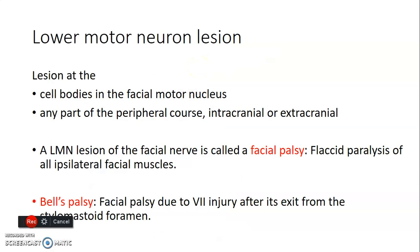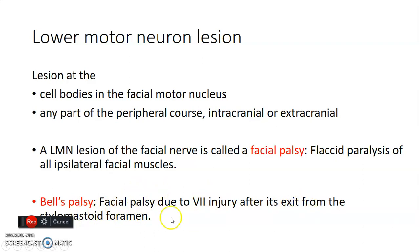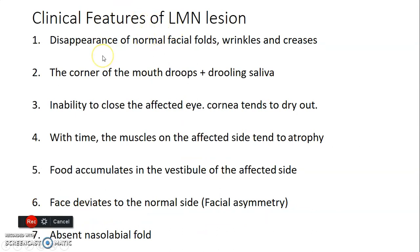In lower motor neuron lesion, the cell bodies of these lower motor neurons are within the facial motor nucleus. A lesion anywhere in the course of the facial nerve will lead to lower motor neuron lesion — facial palsy. Like any other lower motor neuron lesion, there's flaccid paralysis of the ipsilateral muscles. Bell's palsy refers specifically to lower motor neuron facial palsy after the nerve exits from the stylomastoid foramen. Clinical features include disappearance of normal folds and wrinkles in the face, drooping of the corner of the mouth with drooling of saliva, inability to close the eye (cornea dries out), and muscle atrophy over time. Food will accumulate in the vestibule because the buccinator is not working.